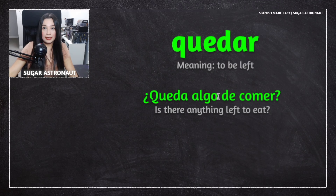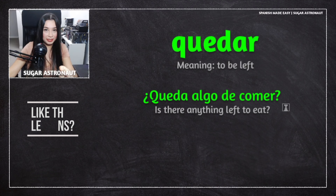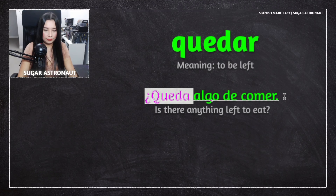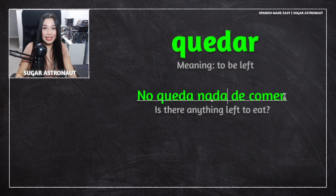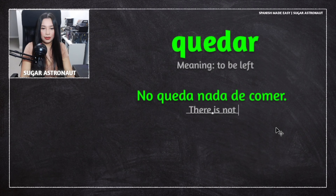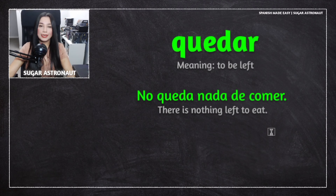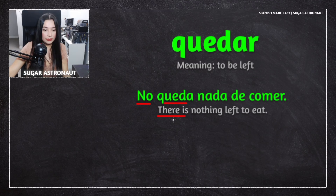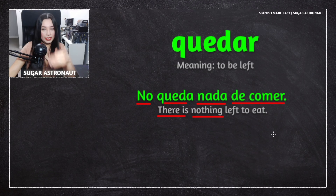To answer the question '¿Queda algo de comer?', someone might say 'No queda nada de comer.' This means 'There is nothing left to eat.' 'No queda' means 'there is not,' 'nada' means 'nothing,' and 'de comer' means 'to eat.'